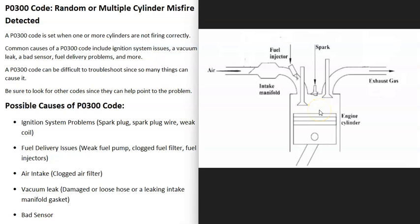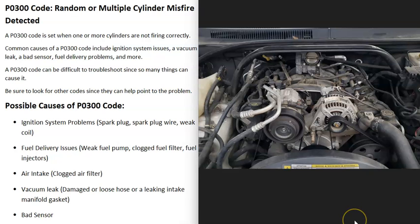Each cylinder inside the engine needs the correct amount of fuel and air. At the right time, the spark plug sends out a spark that ignites the mixture, sending a piston down to turn the crank and keep the engine running. When you get a misfire code, something has gone wrong — either with fuel delivery, the air going into the engine, or the spark not igniting the mixture.